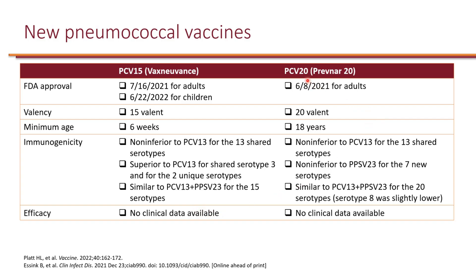The same can be said about PCV20. It has all 13 serotypes from PCV13 plus seven new serotypes, and has been shown to be non-inferior to PCV13 for those shared serotypes. PCV20 is targeting more of the serotypes in PPSV23, with the goal of eliminating the need for getting PPSV23, and has shown non-inferiority for those seven serotypes also included in PPSV23.